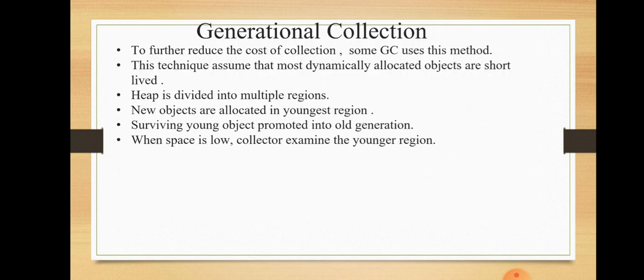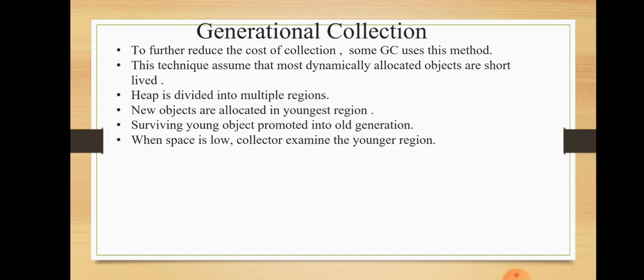The next method is generational collection. To further reduce the cost of collection, some garbage collectors use this technique. It assumes that most dynamically allocated objects are short-lived. In this case, the heap is divided into multiple regions — unlike stop-and-copy which divides into two equal regions, generational collection divides into multiple regions. New objects are allocated in the youngest region.